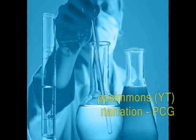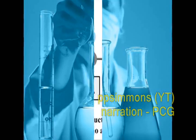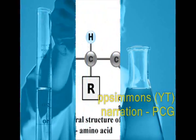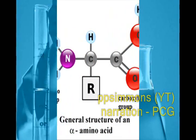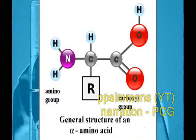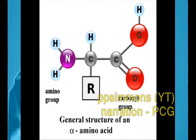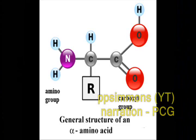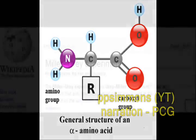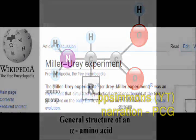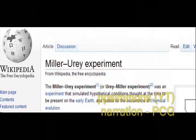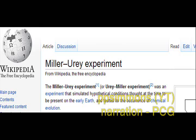Even unto this day, there is no process that has ever converted amino acids into a life form. But this fact does not stop evolutionists from claiming that this experiment is proof that life came from chemicals. Evolutionists know that amino acids do not live, but they call this proof anyway because they claim that amino acids are the building blocks of life.